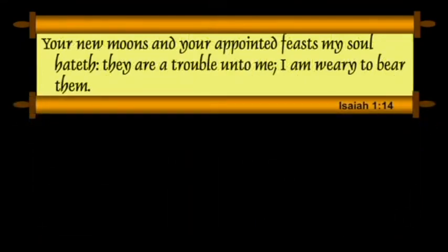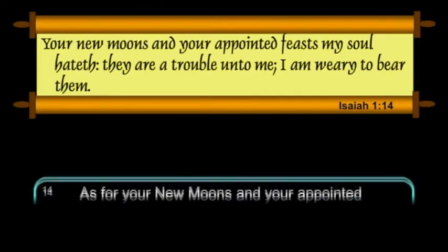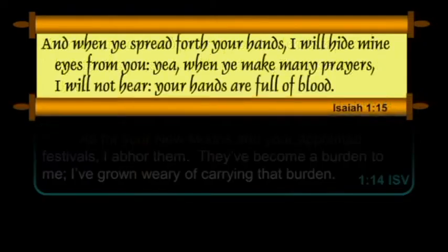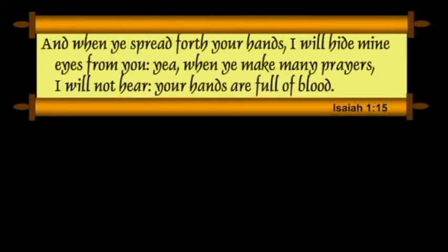Verse 14: "Your new moons and your appointed feasts, my soul hateth. They are a trouble unto me. I am weary to bear them." The ISV: "For your new moons and your appointed festivals, I abhor them. They've become a burden to me. I've grown weary of carrying that burden." This is God talking about sacrifice, things they thought were part of his ordinances. Verse 15: "And when ye spread forth your hands, I will hide mine eyes from you. Yea, when ye make many prayers, I will not hear. Your hands are full of blood."